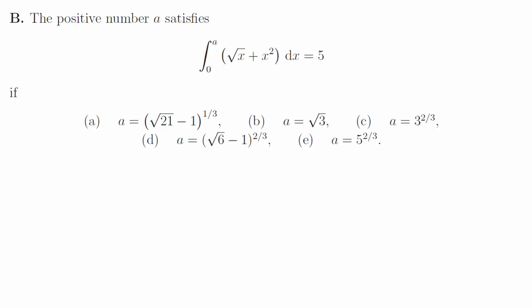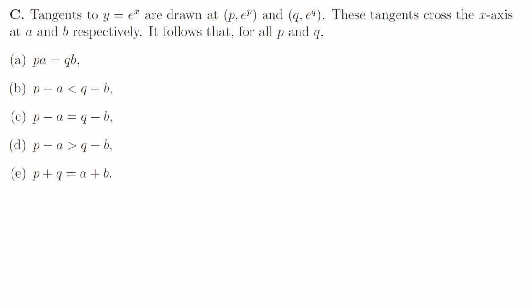1b. The integral is 2 thirds a to the 3 over 2 plus 1 third a cubed, which is a quadratic for a to the 3 over 2. You solve the quadratic to get 3 or minus 5, but we want a to be positive, so it's 3 to the power of 2 thirds, which is c.